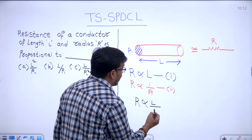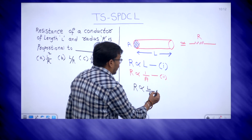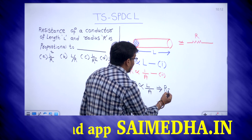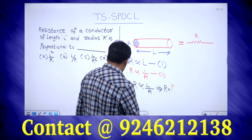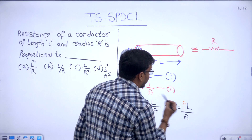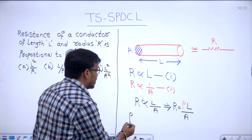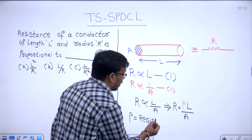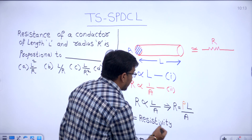Where L is the length of the conductor and A is the cross-sectional area. When we replace proportionality with equality, we multiply by a constant — that constant is rho (ρ). So R equals rho times L divided by A.